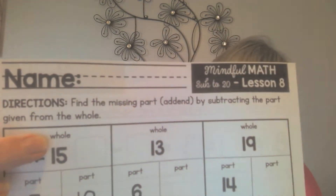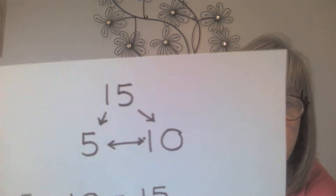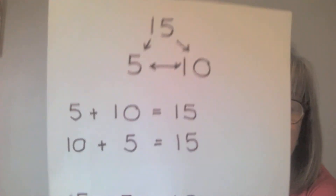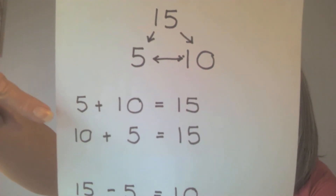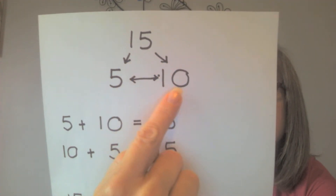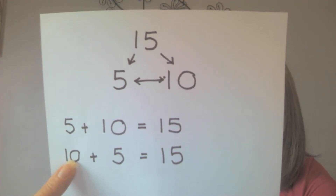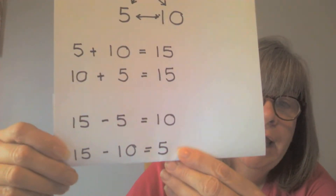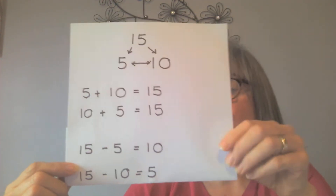The whole is 15, separated into two parts: 5 and 10. Down below I use those numbers to make two adding questions: 5 plus 10 equals 15 — part plus part makes a whole — then the flip-flop: 10 plus 5 equals 15. You start over here, add that, and end up with the whole.